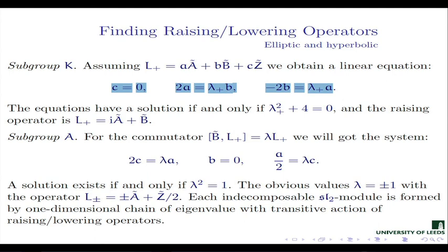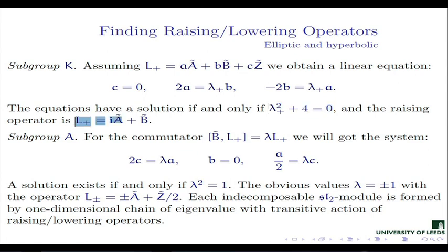This is a linear system with lambda as parameter and A, B, C as unknowns. The compatibility condition — determinant equal to zero — gives lambda squared plus 4 equal to zero. The only solution is lambda equals plus or minus 2i. So we need to introduce complex numbers to make the ladder operator for subgroup K or its generator Z exist. The ladder operator L_+ is then such a linear combination, and in fact this is exactly the operator which annihilates the mother wavelet for the Cauchy kernel.